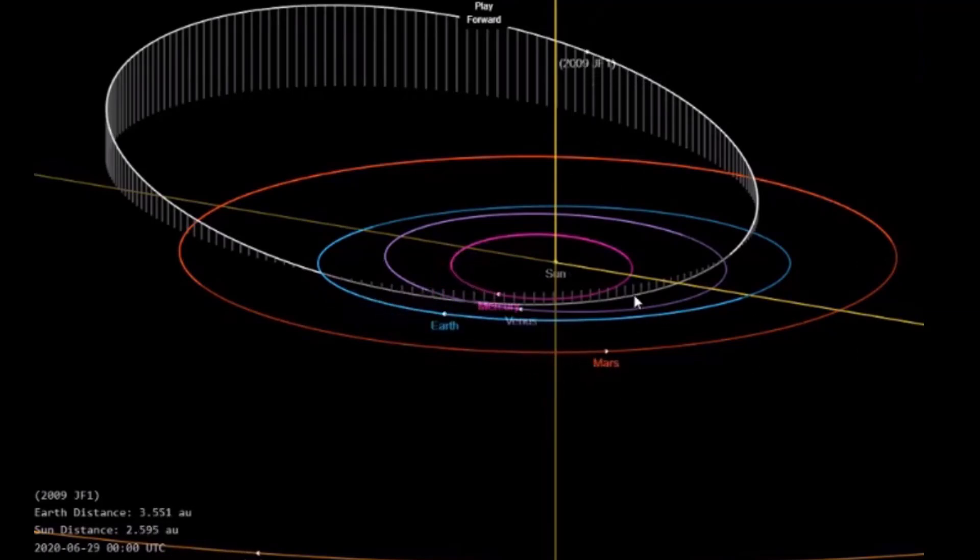NASA designated JF1 as a near-Earth object or NEO. NASA defines a NEO as comets and asteroids that have been nudged by the gravitational effect of nearby planets into orbits that allow them to enter the Earth's neighborhood. If a comet or asteroid's approach brings it within 1.3 astronomical units of the sun, we call it a near-Earth object.